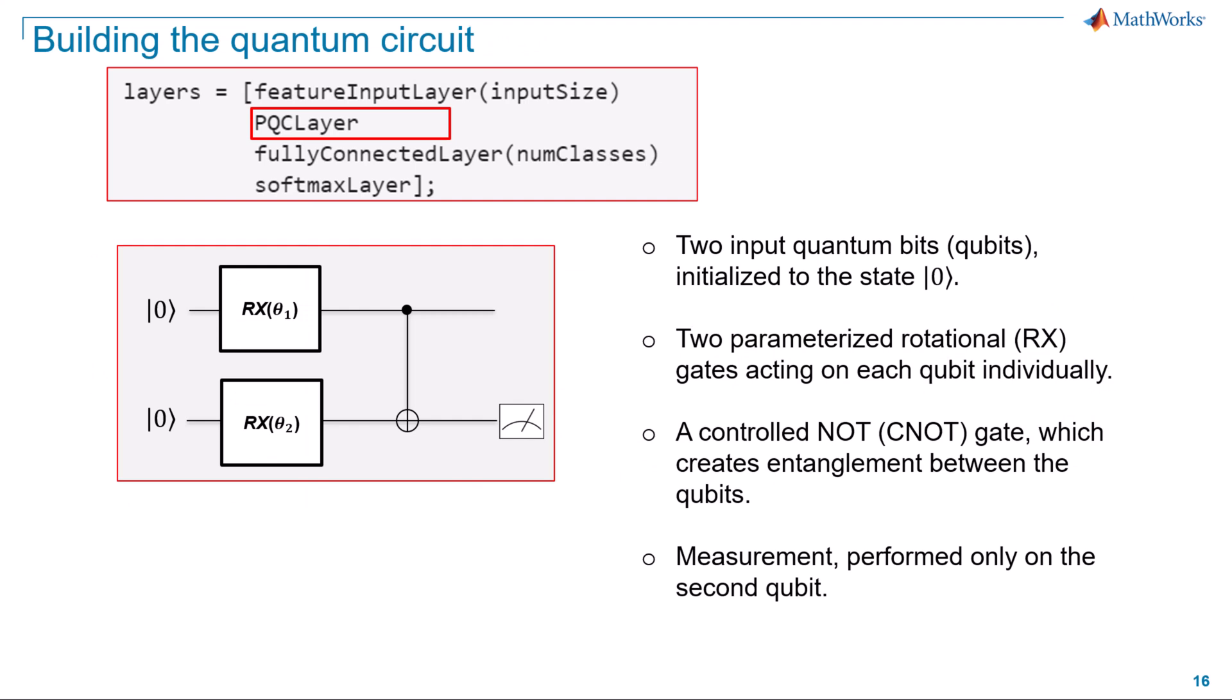Here is the quantum circuit for the PQC quantum layer. The main elements of the quantum circuit include two input quantum bits or qubits initialized to state 0 for a known starting state for all computation and three quantum gates. The first two parameterized rotational Rx gates act on the individual qubits which encode the input data to the network. The third gate is a controlled NOT gate which acts as the entanglement block of the quantum neural network, processing the data non-linearly for this classification task.